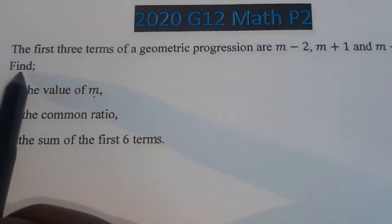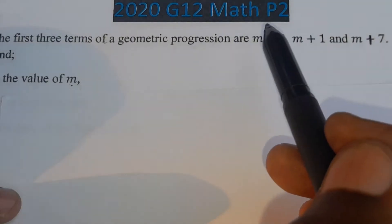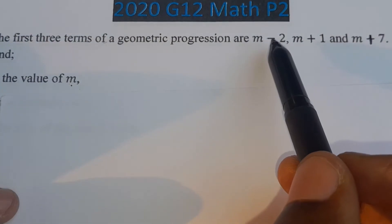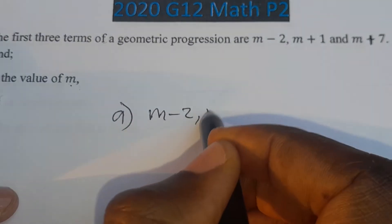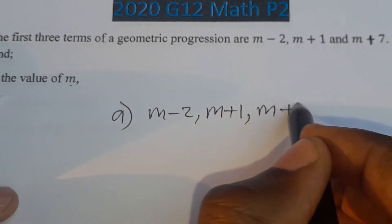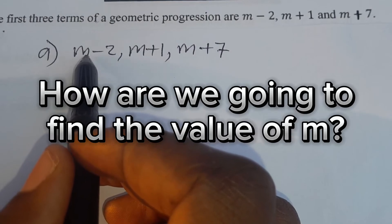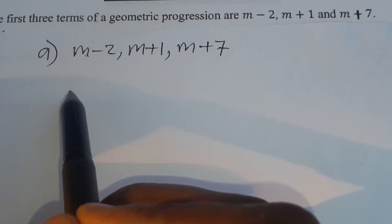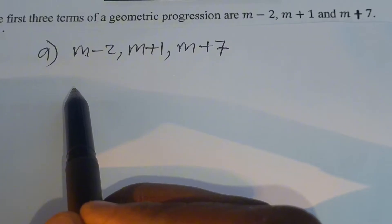The question says find the value of m. We have been given the first three terms of this geometric progression as m minus 2, m plus 1, and m plus 7. To find the value of m, we are going to use the formula for finding the common ratio of a geometric progression.